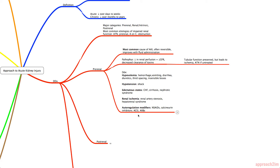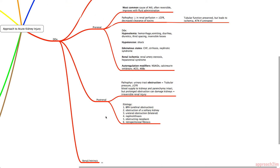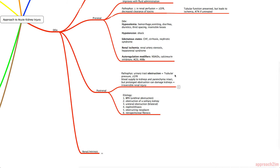The next major category — even before intrinsic renal disease — should be post-renal causes of AKI, because these are more common and higher yield. In post-renal processes, there is a urinary tract obstruction leading to increased tubular pressure and decreased GFR. The blood supply and parenchyma are intact, but prolonged obstruction can damage the kidneys and lead to irreversible renal injury.